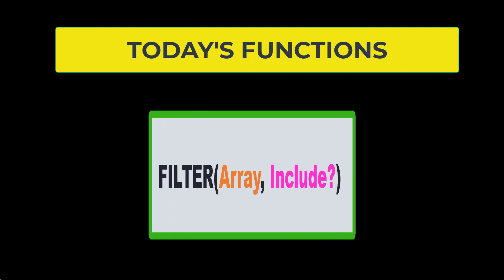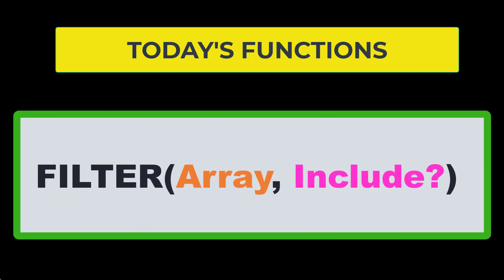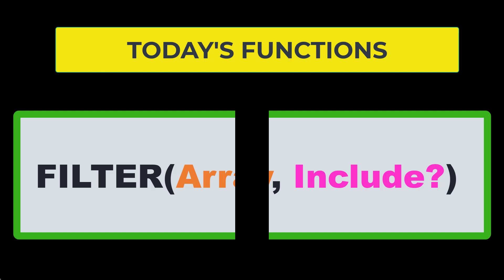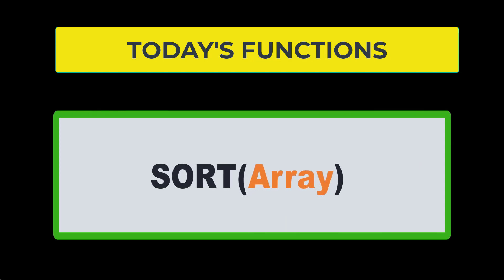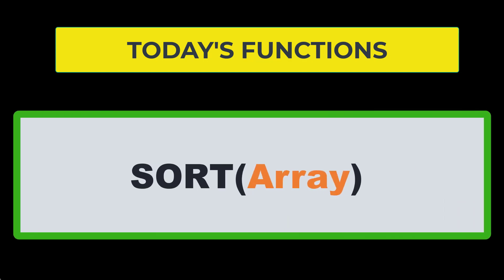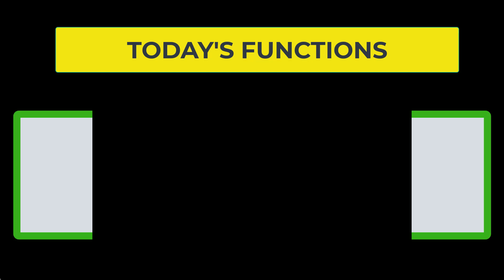The next function is the FILTER function, which takes an array and a TRUE/FALSE include argument to filter out your data. And finally, we're going to use the SORT function, which sorts a whole array of data alphabetically.